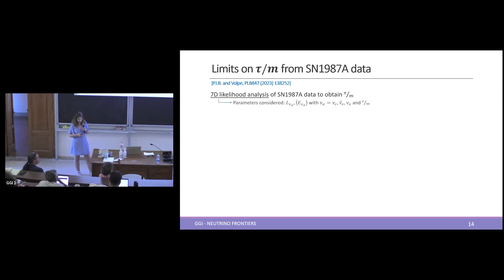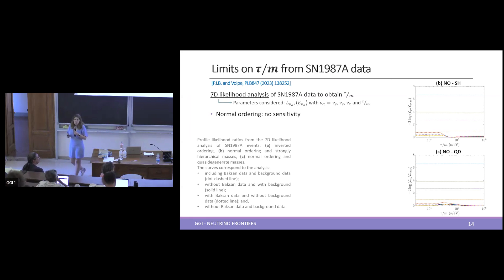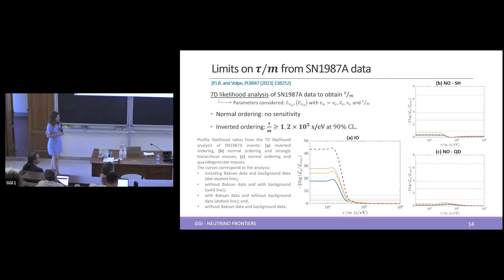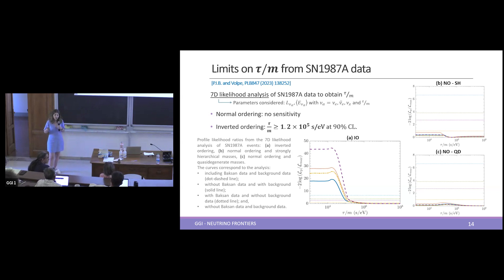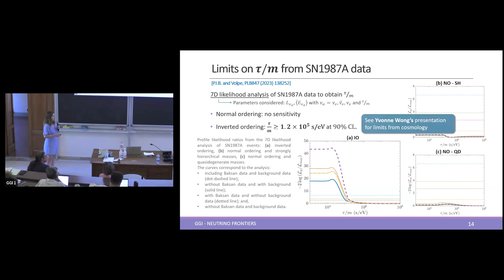For supernova 1987A, we performed a likelihood analysis of the data to extract limits on τ/m. In normal ordering there's no sensitivity to this kind of decay, but in inverted ordering we were able to extract lower limits. At 90% confidence level, we obtained that the lifetime-to-mass ratio must be larger than 1.2×10^5 seconds per eV. This is one of the most stringent limits, improving over limits from terrestrial experiments, solar neutrino data, and high-energy astrophysical data. Only cosmological limits improve upon this.